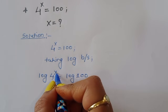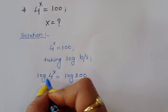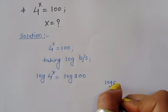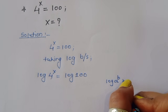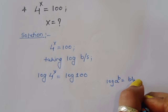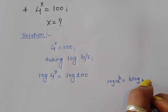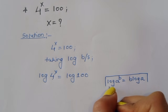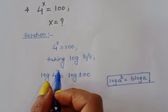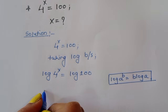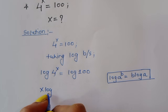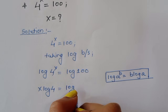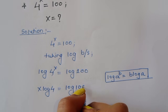Now, log of a power b — the formula is: log of a power b is equal to b times log of a. Using this formula, we will get x times log of 4 is equal to log of 100.